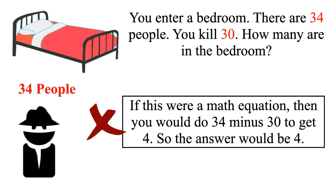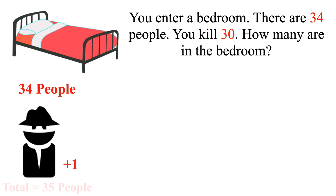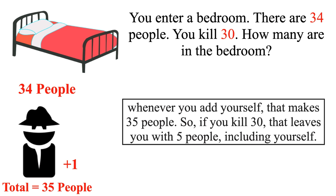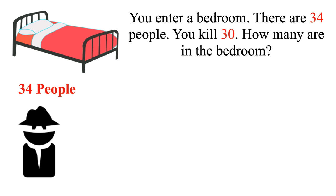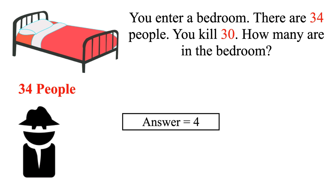But if you treat this as a riddle it would be different. Many think the answer would be 5 — because there are 34 people in the room when you enter, but when you add yourself that makes 35 people, and if you kill 30 that leaves 5 people including yourself. However, this is not the correct solution. There could be another interpretation: the riddle states you enter a room and there are 34 people, so that could mean you are one of the 34. It doesn't specify whether you and 34 others are in the room or if you are included in the group, so technically the answer could also be 4 if you include yourself among the 34.